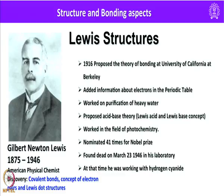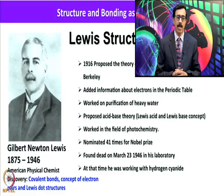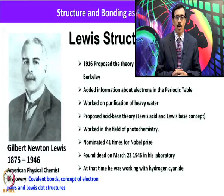The first major advancement in bonding was made by Gilbert Newton Lewis, who in 1916 proposed the theory of bonding at the University of California at Berkeley — called Lewis dot structures. Besides working on bonding concepts, he added information about electrons in the periodic table, worked on purification of heavy water (D2O), and proposed the Lewis acid-base theory, which is one of the fundamental studies concerning the interaction of acids and bases. He also worked in the field of photochemistry and was nominated 41 times for the Nobel Prize. Unfortunately, he was found dead on 23rd March 1946 in his laboratory at Berkeley, while working with hydrogen cyanide.